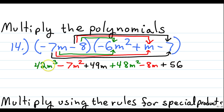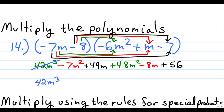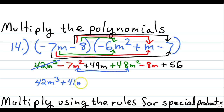Looking at our terms, we have m to the third on the left side. We check for any other m cubed terms — there are none, so we carry down 42m cubed and cross it out. Next, negative 7m squared and positive 48m squared are like terms. Negative 7 plus positive 48: they're opposites, so 48 minus 7 gives us positive 41m squared. We cross these out.